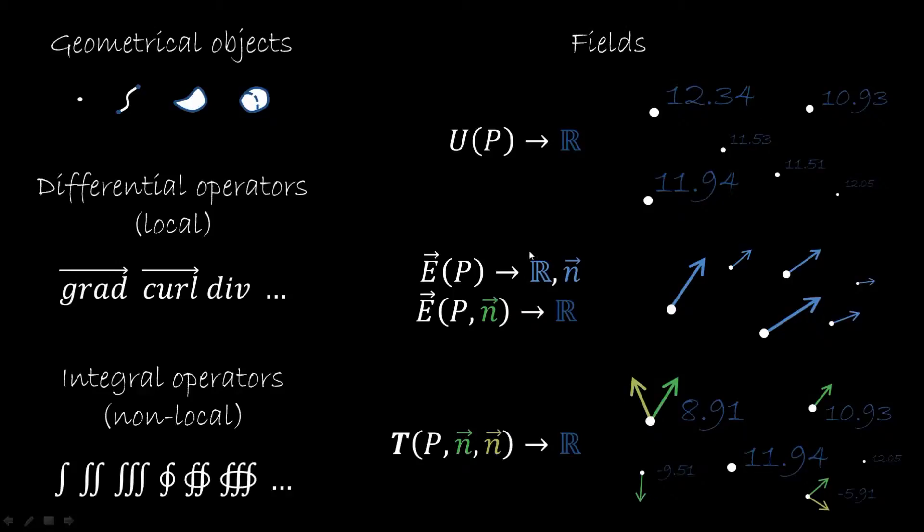So these are fields which are basically functions of points and directions. Then we'll have geometrical objects, which are points, lines, surfaces and volumes.